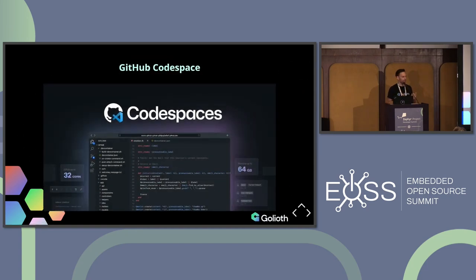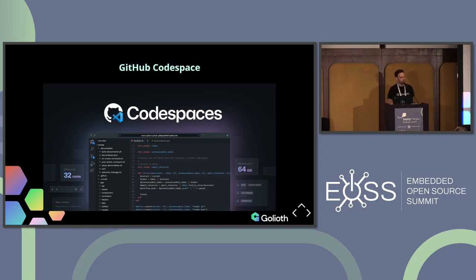Lastly, GitHub launched Codespaces — a beefy machine in the cloud based around Visual Studio Code. So everything we talked about today would apply directly, except using someone else's big machine instead of your potentially underpowered machine.